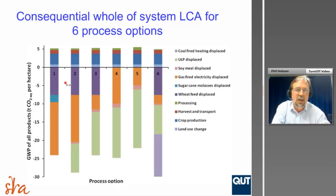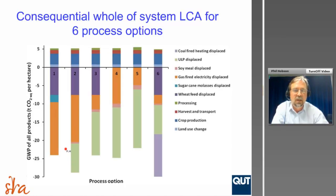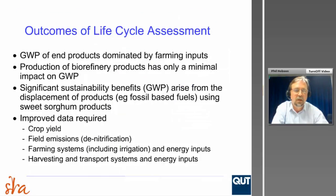We then looked at a consequential or system expansion analysis — where emissions associated with putting inputs to the process are shown above the line, and down below are all the avoided emissions as a result of the products produced in the biorefinery. The key finding was that the emissions associated with the actual production process in the biorefinery are very small. Most of the emissions, as with sugar production, happen out in the field. And as a result of what we produce, we can get very large CO2 offsets — which was an encouraging outcome from that particular project.